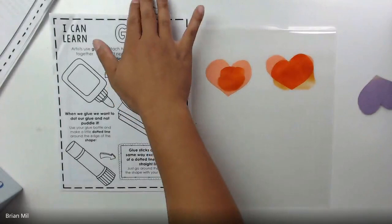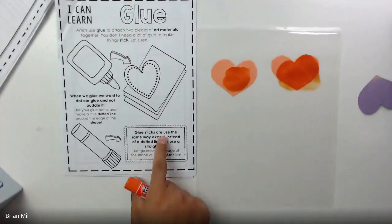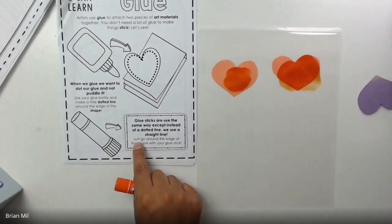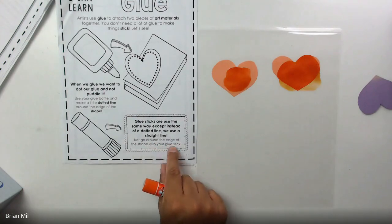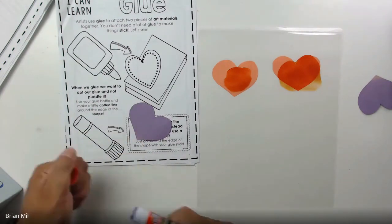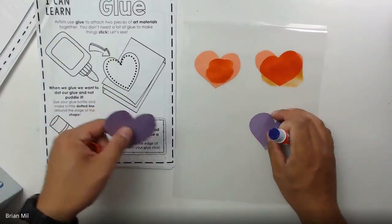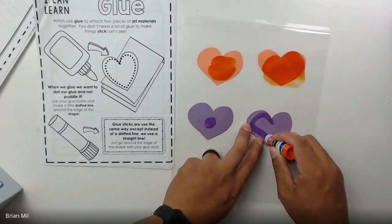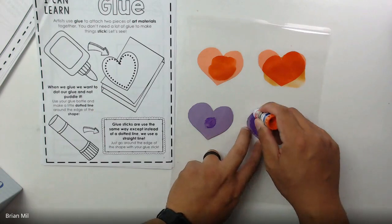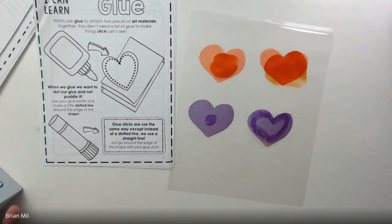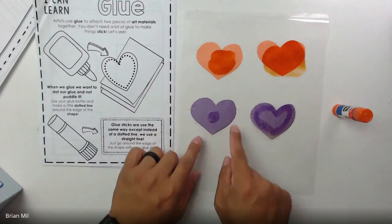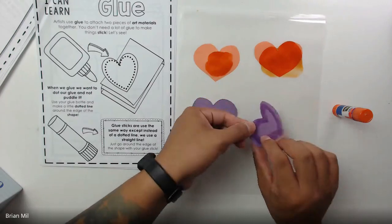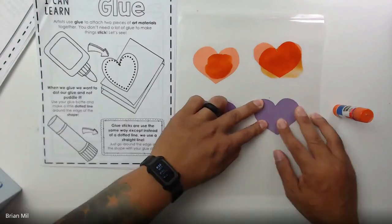Alright, so I'm going to move a little bit quicker because we're running out of time here. The next one says glue sticks are used the same way, except instead of a dotted line we use a straight line. So it says just go around the edge of the sheet with your glue stick. So I'm going to use a purple heart this time for both of them. For one I'm going to do a dot and for the other one I'm going to do an outline of the shape like it said. You guys see that? So that was a glue stick. What I'm going to do is turn them both over so they could stick to this plastic sheet of paper right here.